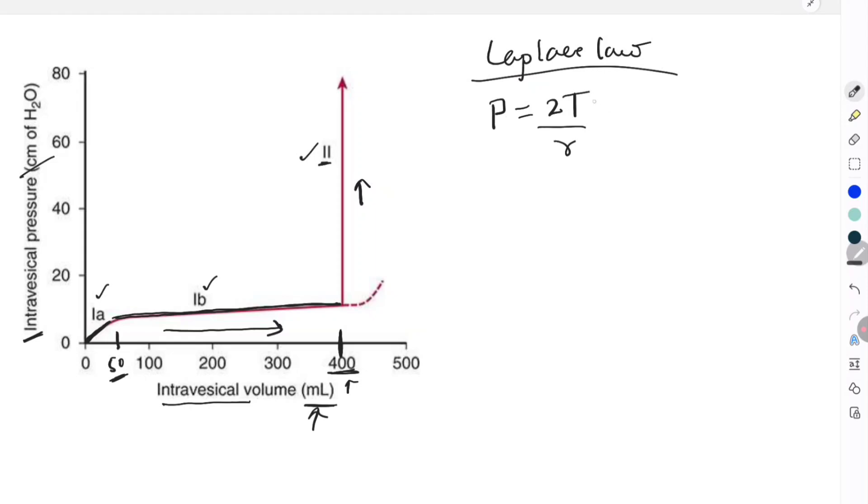That means the pressure is directly proportional to the tension. If the tension in the wall is increasing, the pressure is also going to increase. The pressure is inversely proportional to the radius.